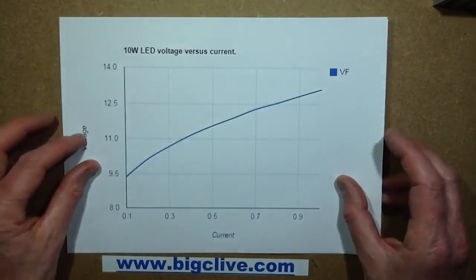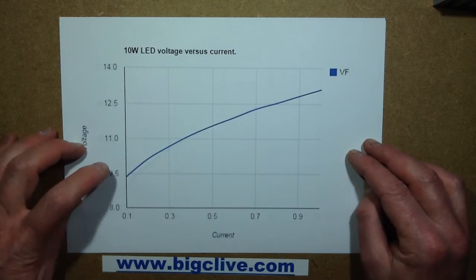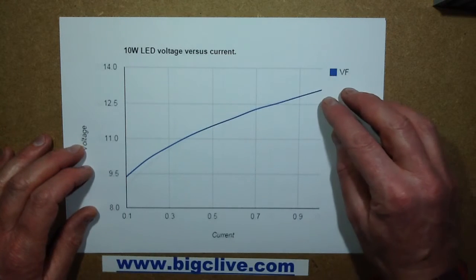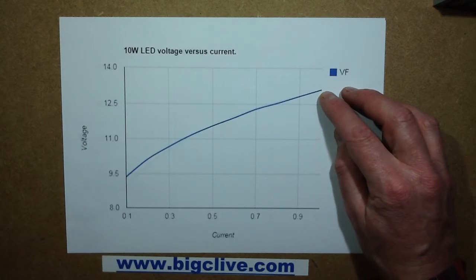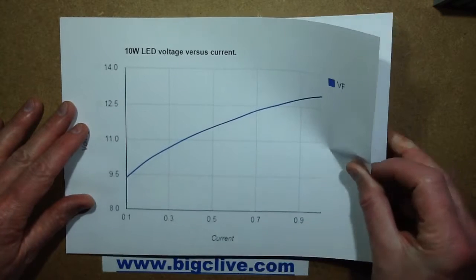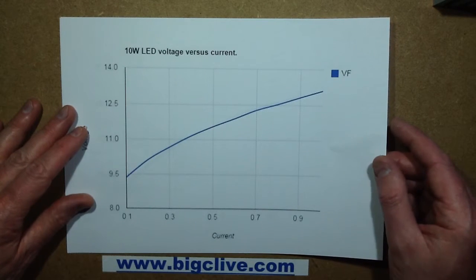During the test, the 10W LED voltage versus current started off at 100mA around about 9.5V and went up quite high to about, best part about 13V. In fact, looking at the chart over there, by the time it got to 1A it was at 13.11V.